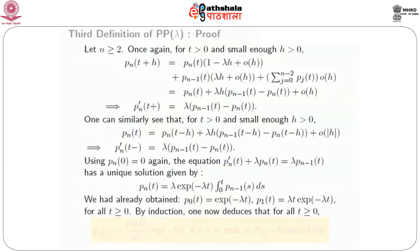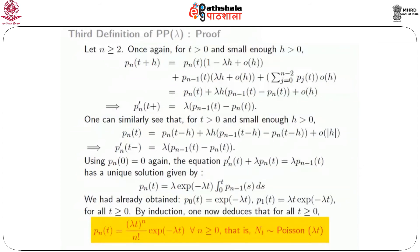We have already proved that p_0(t) = e^{-lambda*t} and p_1(t) = lambda*t * e^{-lambda*t}. One can now use induction: given p_{n-1}(t), plug it into the equation to find p_n(t). We get the result that N(t) is a Poisson random variable with parameter lambda*t.